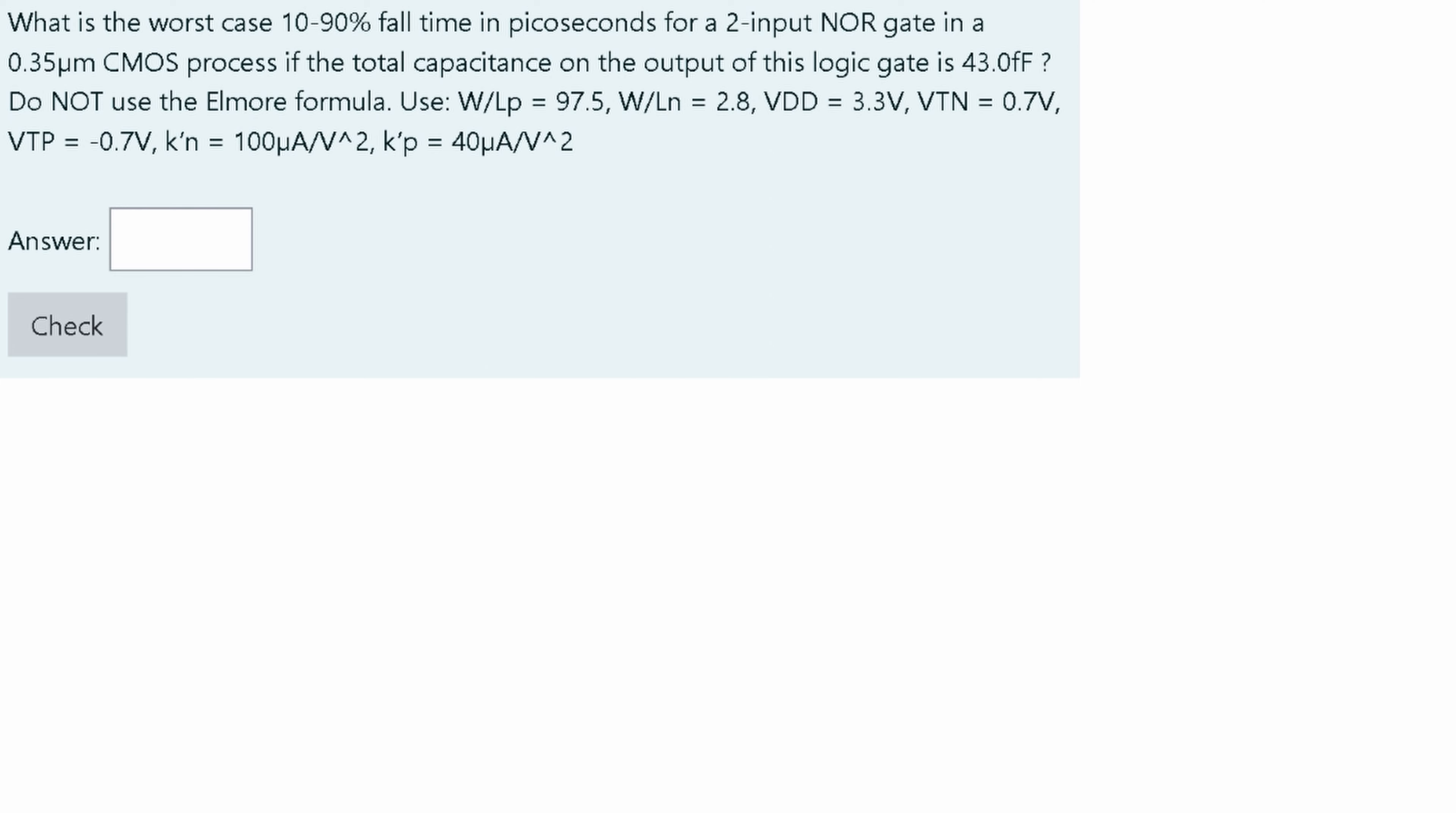With the given problem and given variables, we're going to solve for the worst case fall time in picoseconds for a two-input NOR gate if we're given the rest of these variables. We'll go through some steps on how to solve a problem just like this. Your variables might not be the same, so that's why I say that.